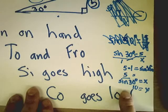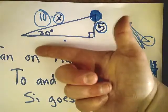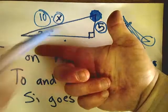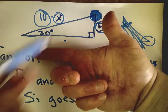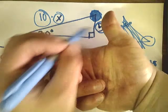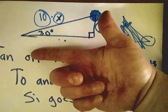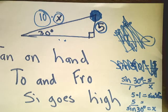What about 'co goes low'? If I were given the side down below rather than up top, it would be a cosine question. The setup would be exactly the same. So: tan on the hand, to and fro, psi goes high, co goes low. Say it to yourself over and over again — it's very easy.